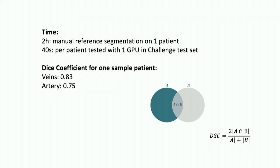The time spent on creating manual reference segmentation for one patient was above two hours, while the time for getting the test result on one patient sample using one GPU is only 40 seconds. We adopted the Dice coefficient to calculate accuracy for vessel segmentation. The accuracy for vein on one patient is 0.83, and for artery is around 0.75.